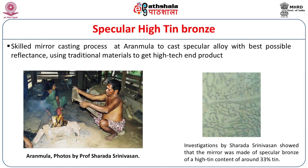In some of the traditional workshops such as Aranmulla, you still see the manufacture of these skilled metal mirrors, made of a specular alloy with 33% tin for the best possible reflectance. The microstructure shows a very silvery-white colour due to the optimization of the delta phase of bronze. Though this alloy is very brittle, the whole casting and polishing process is geared up to optimize the presence of the delta bronze alloy to achieve the best possible mirror.